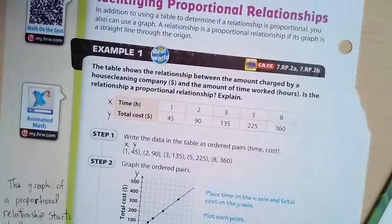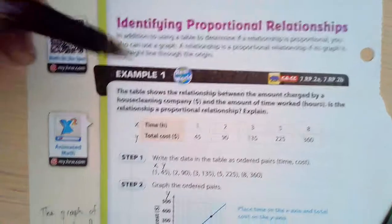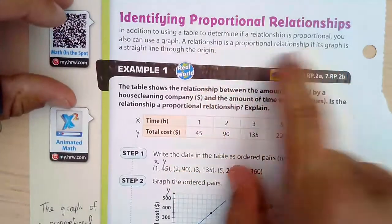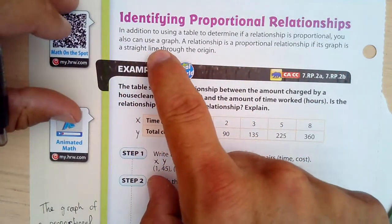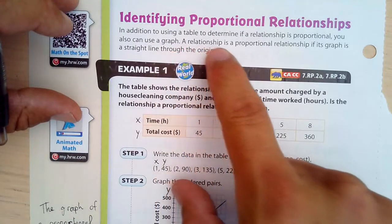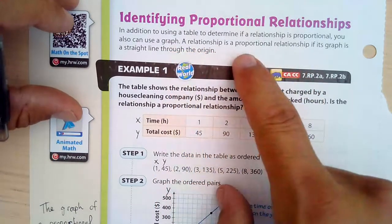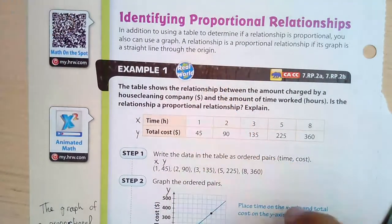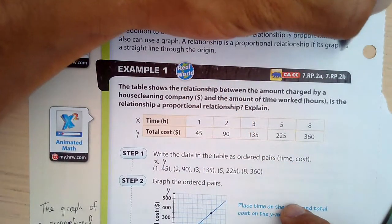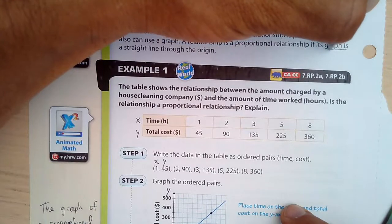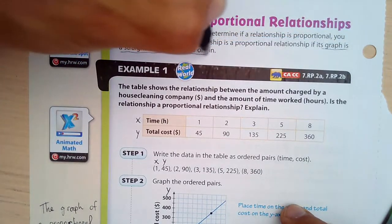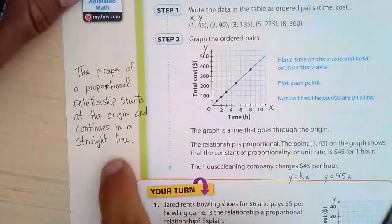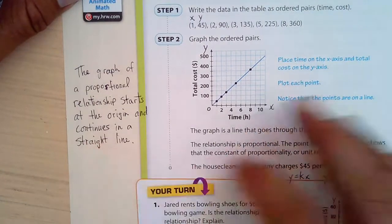On the back, identifying proportional relationships. In addition to the table, you can also graph these relationships. And a relationship is a proportional relationship if the graph is a straight line through the origin. It's a straight line through the origin.